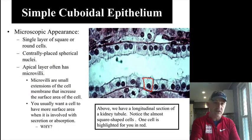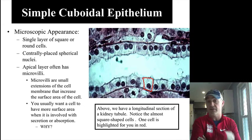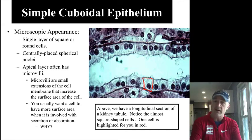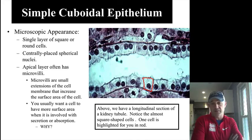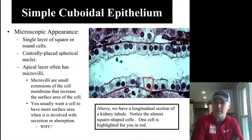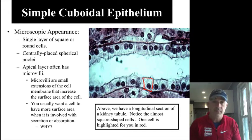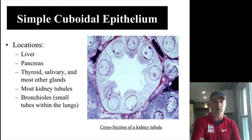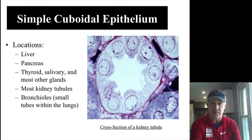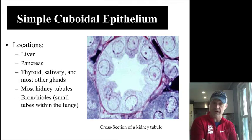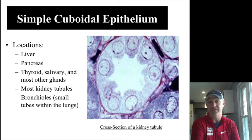Simple cuboidal epithelium is a single layer of cube-shaped cells where height and width are about the same, with a circular nucleus in the center. Sometimes you might see microvilli — definitely in kidney tubules — indicating a lot of absorption. We also see this in glandular epithelium doing secretion. So this type is mainly involved in absorption and secretion. We find it in glandular organs: the liver, pancreas, salivary glands, and thyroid gland — all things that make substances for secretion.